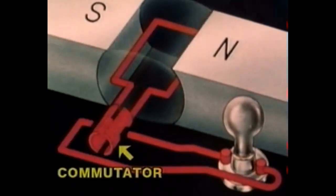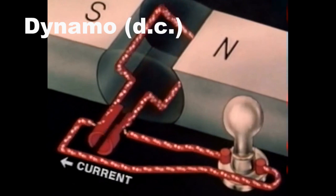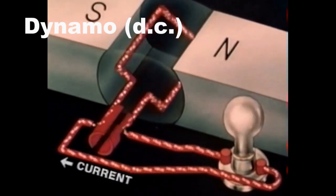If, on the other hand, you have a split-ring commutator, then the current will always go in one direction. This will be DC and a dynamo.